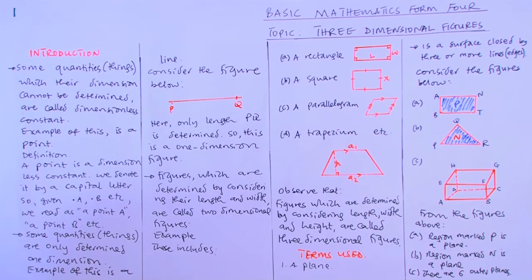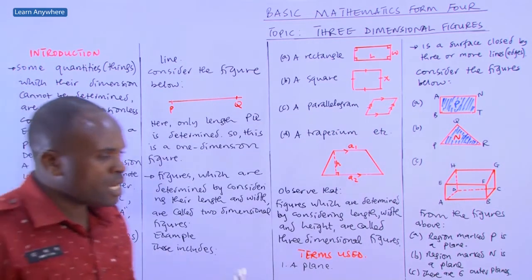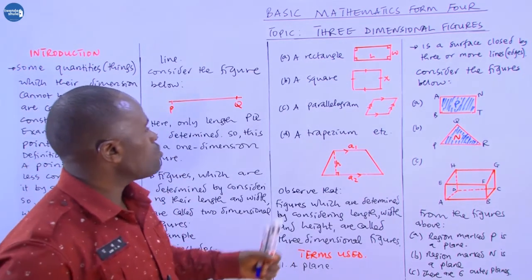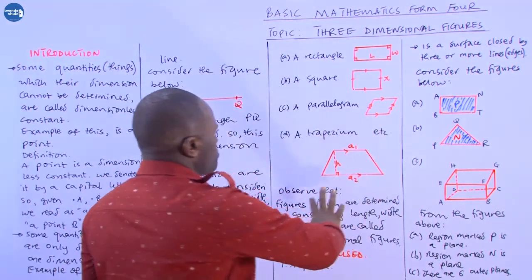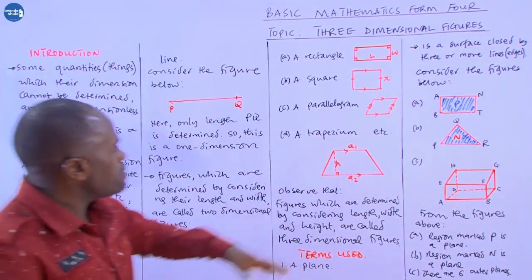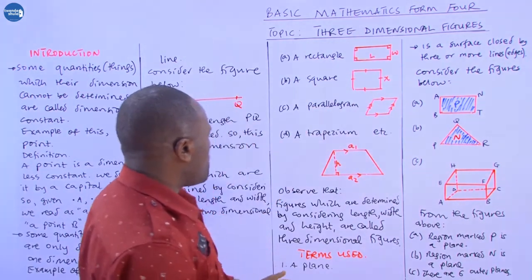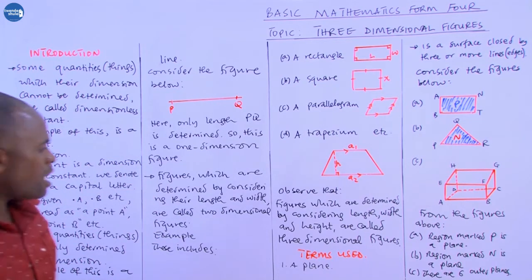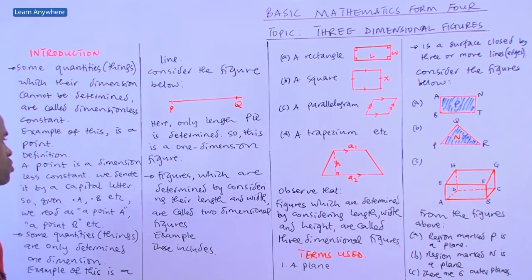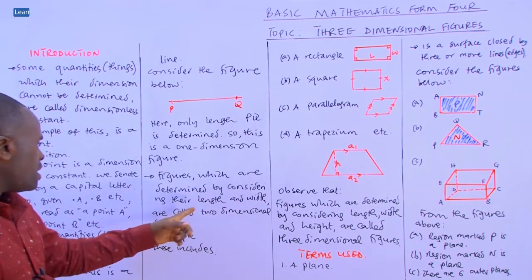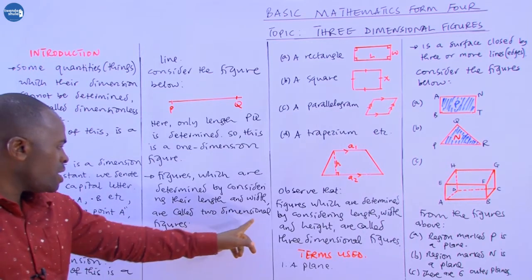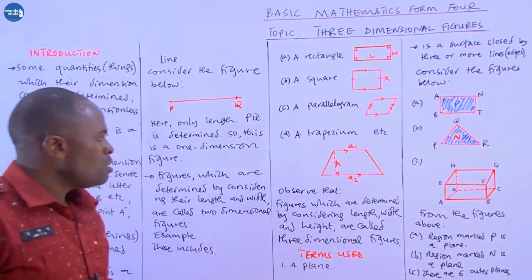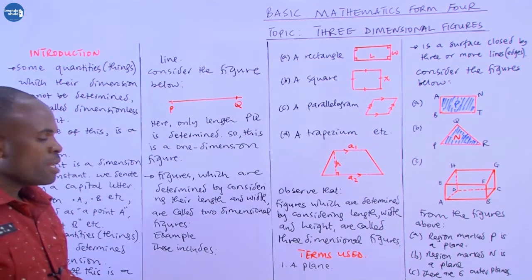There are also figures determined by considering two dimensions — length and width. Examples include a rectangle, a square, a parallelogram, a trapezium, and a rhombus. Figures determined by their length and width are called two-dimensional figures.